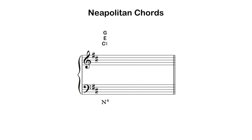A C major triad gives us the pitches C, E, and G. Notice also how the Roman numeral doesn't look like other Roman numerals we typically encounter. Instead of a flat-two — which you'll sometimes see — more commonly you'll just see the capital letter N, which stands for Neapolitan. So just be on the lookout for that.